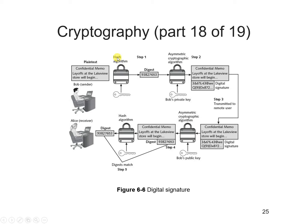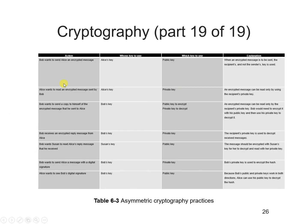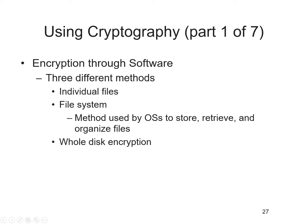To send a digitally signed message, Bob uses a hash algorithm to verify the integrity of the document, creating a digest. He then uses his private key to create a digital signature. The message is sent along with the digital signature and Bob's public key. Alice uses her private key to decrypt the message, and the digest is further used to verify that the document has not been changed.